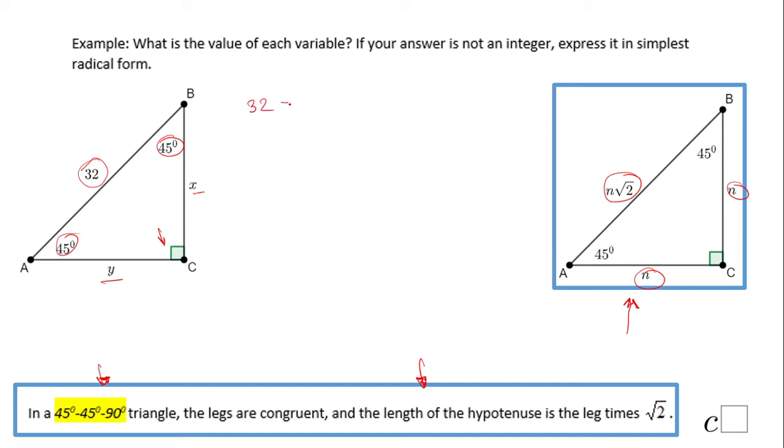So I'm going to solve an equation. I'm going to divide by square root of 2 on both sides, and I end up with n equals 32 over square root of 2, which is a good answer. However, we need to rationalize.